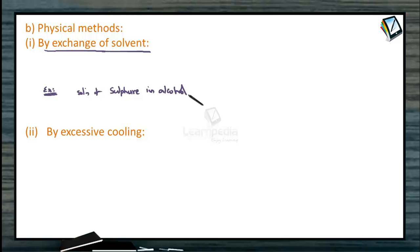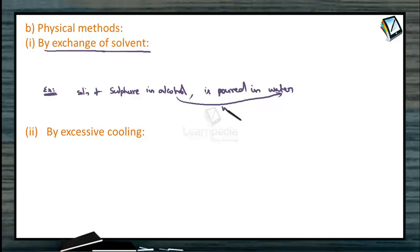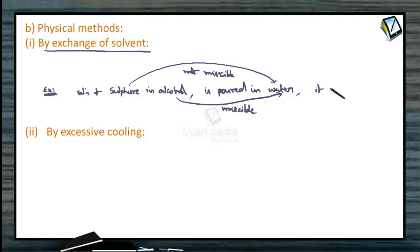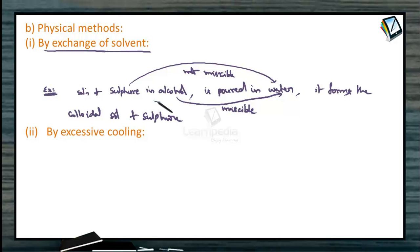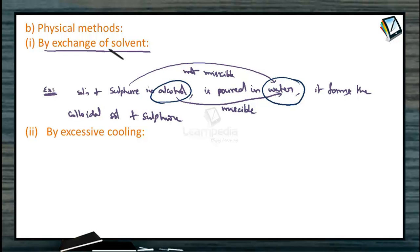The solution of sulphur in alcohol forms a homogeneous solution, but when poured into water, the alcohol is miscible in water while sulphur is not, so it forms a colloidal solution of sulphur. We are exchanging the solvent — initially it is alcohol, and we exchange it with excess water. The water dissolves the alcohol but not the sulphur, forming the corresponding colloid. This is called the exchange of solvent method.